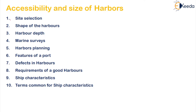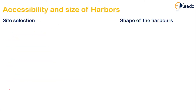The ten factors are: first, site selection; second, shape of the harbour; third, harbour depth; fourth, marine survey; fifth, harbour planning; sixth, features of a port; seventh, defects in harbour; eighth, requirements of a good harbour; ninth, ship characteristics; and tenth, terms common for ship characteristics. All of these we have to see in detail.